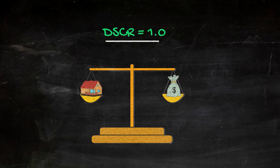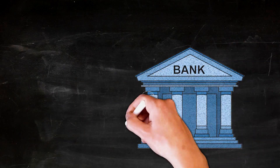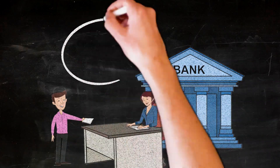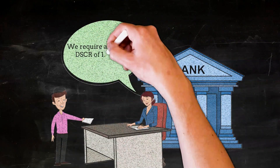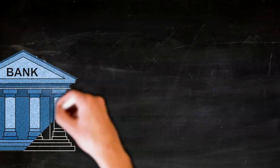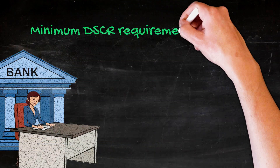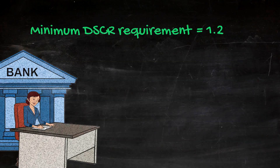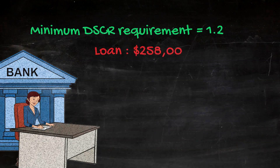But that's just to break even. Most banks will want to see a healthy cushion in your monthly cash flow over and above this number. Typically, the banks will ask for a minimum DSCR of 1.2 or 1.25. So in this example, if the bank's minimum DSCR requirement was 1.2, the most it would be willing to lend on this property would be about $258,000.